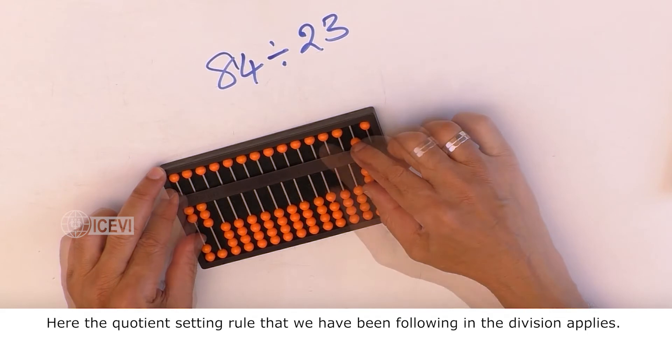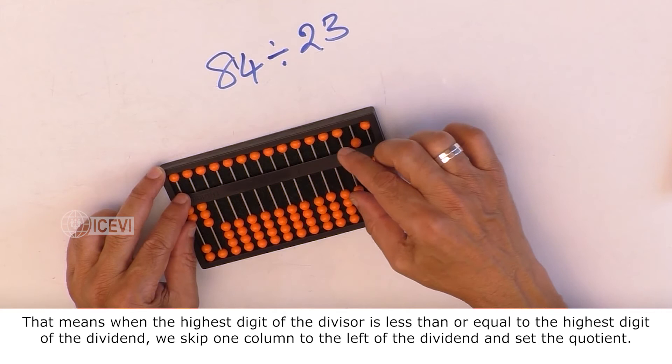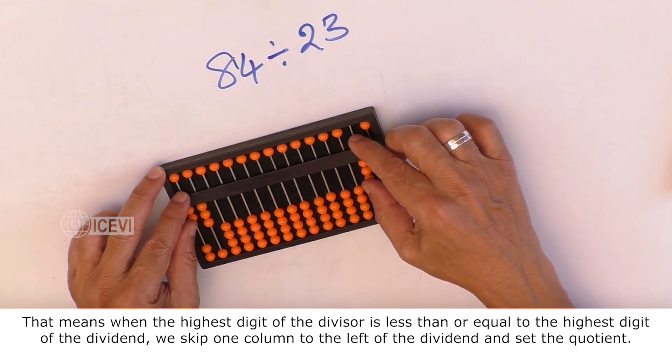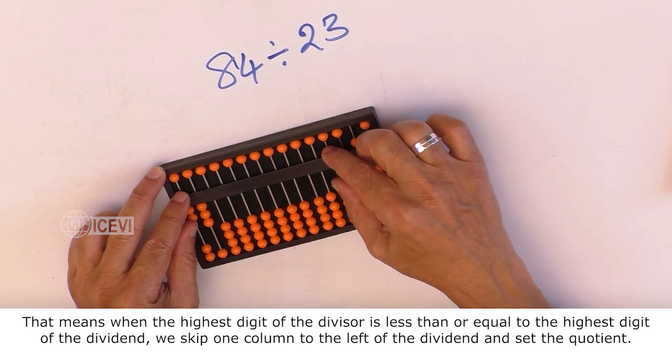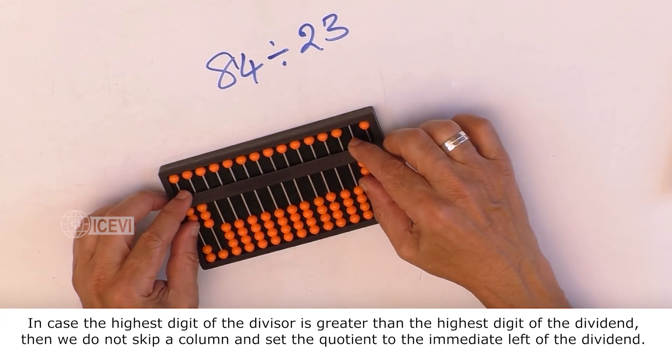That means when the highest digit of the divisor is less than or equal to the highest digit of the dividend, we skip one column to the left of the dividend and set the quotient.